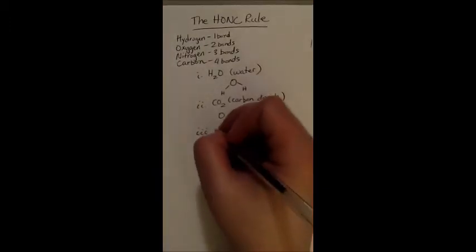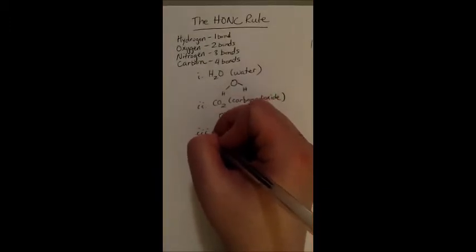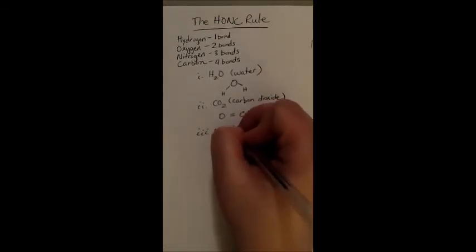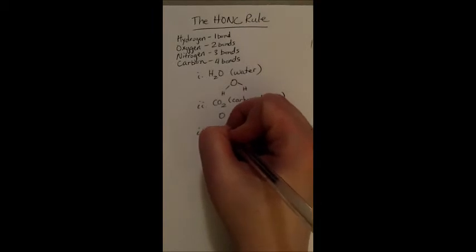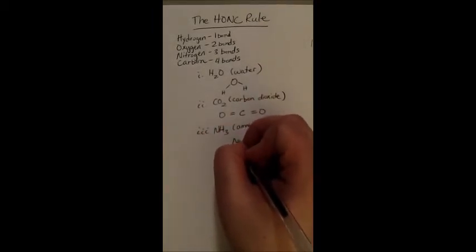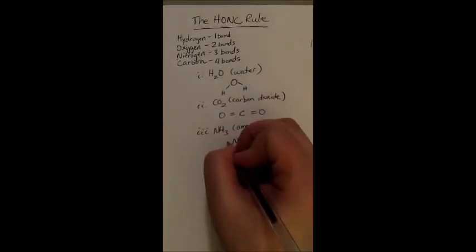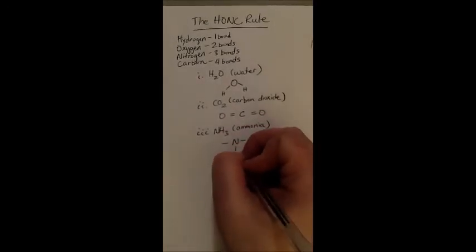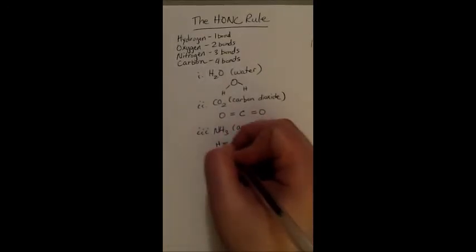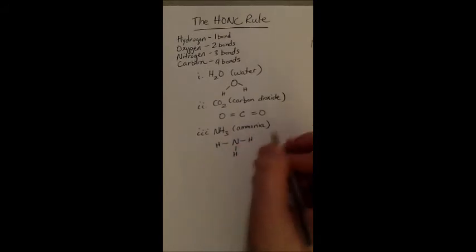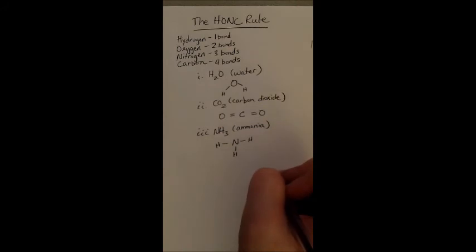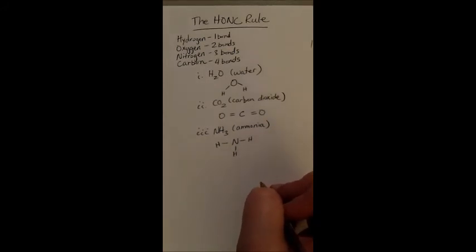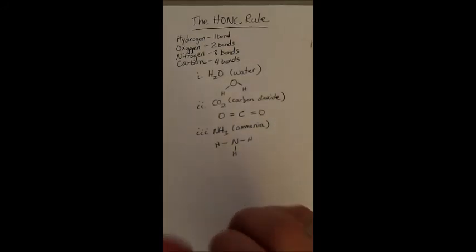Taking a look at number three, our third example is NH3, which is also ammonia. This is one example with nitrogen. So we have a nitrogen. Nitrogen wants three bonds. And we're going to have an H connected to each of those bonds. So one bond, two bonds, three bonds for nitrogen. And that is three examples of the HONC Rule and its basics.